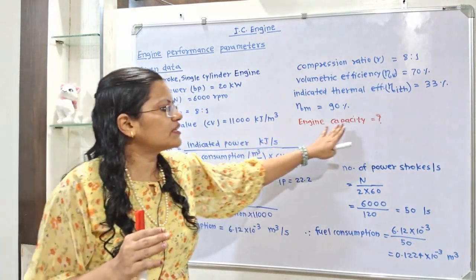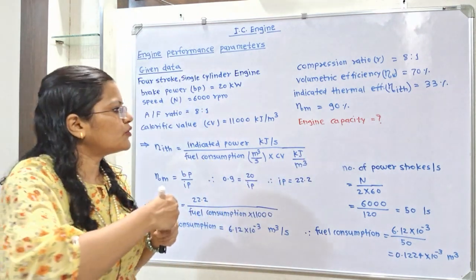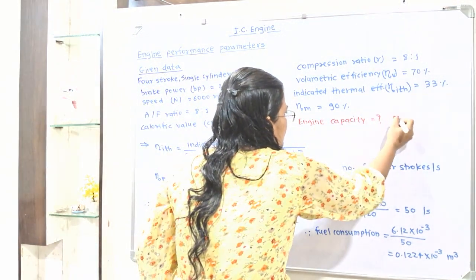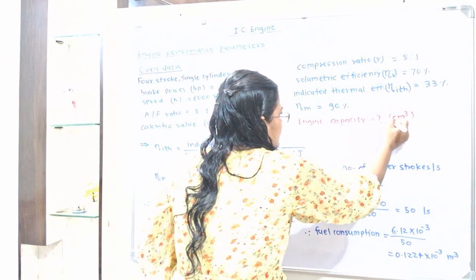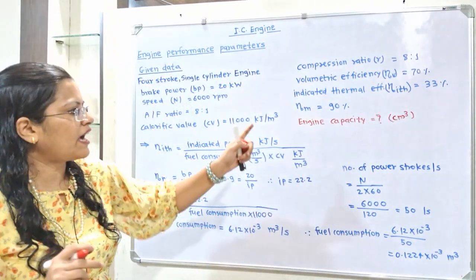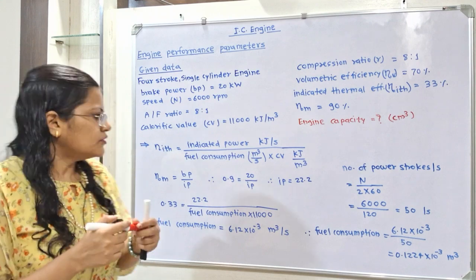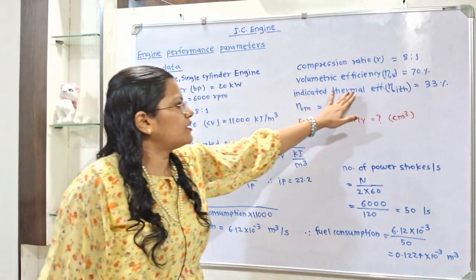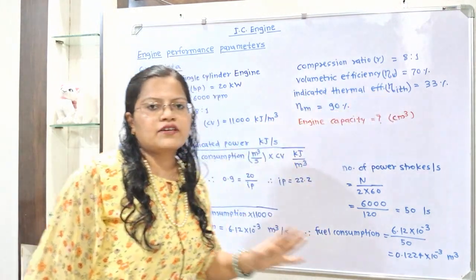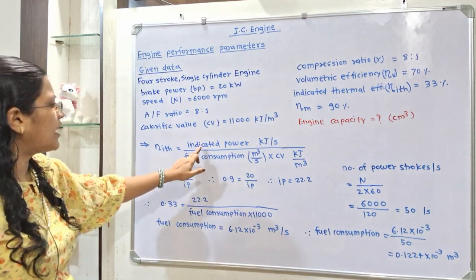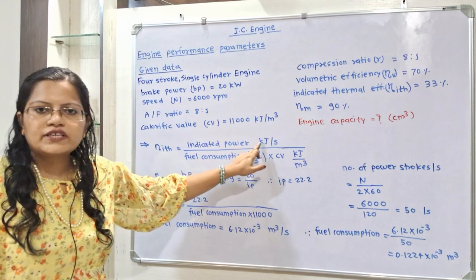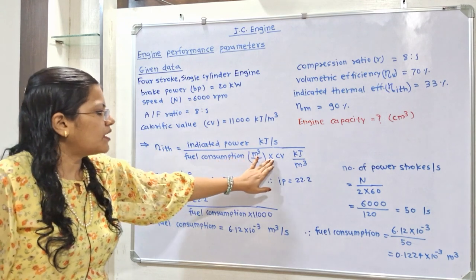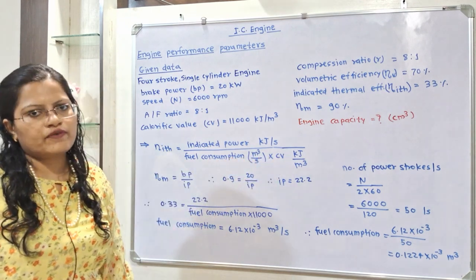We have to find out engine capacity, whose unit is cc, that is centimeter cube. To begin, we take the indicated thermal efficiency formula: indicated thermal efficiency equals indicated power (in kJ per second) divided by fuel consumption multiplied by calorific value of the fuel.